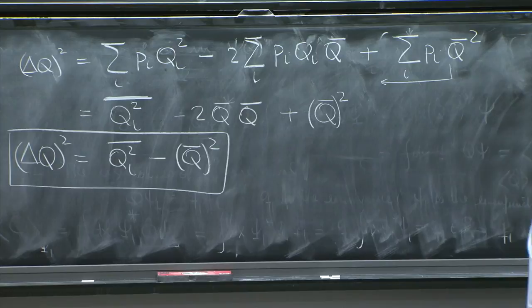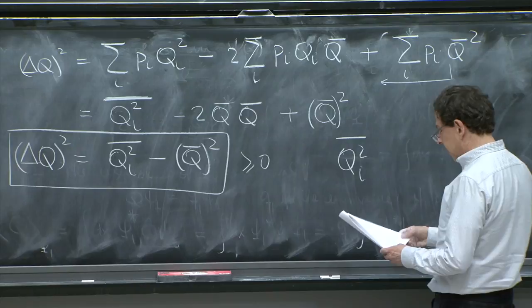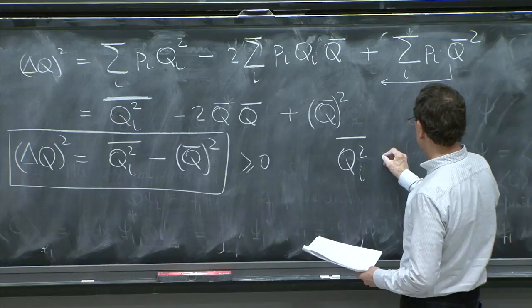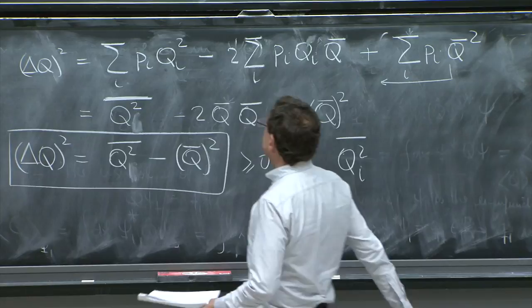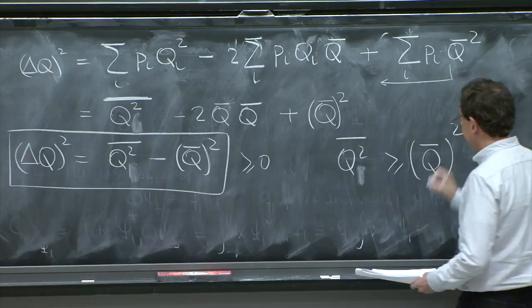And from this, since this is greater or equal than 0, you always conclude that the mean of the square is always bigger than the, maybe I shouldn't have the i here. I think it's a random variable q squared. So the mean of the square of this is greater or equal than q bar squared.